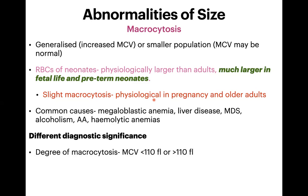The degree of macrocytosis helps in differential diagnosis. If MCV is more than 110 fL, you are most likely dealing with megaloblastic anemia. If it is less than 110 fL, causes are more likely liver disease, MDS, alcoholism, or aplastic anemia. This is a soft pointer, not a hard-and-fast rule, but the degree of macrocytosis can help narrow the differential.